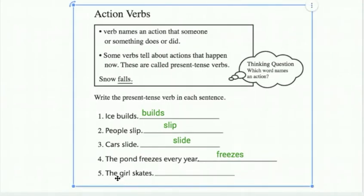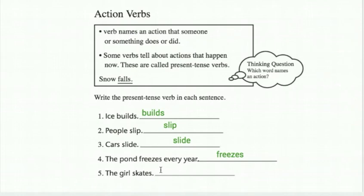Number five: Goal skates. Which word names an action? Skates — that's an action. So today we will also identify action verbs in a sentence.